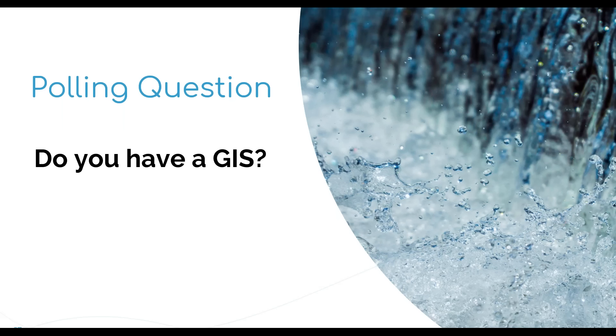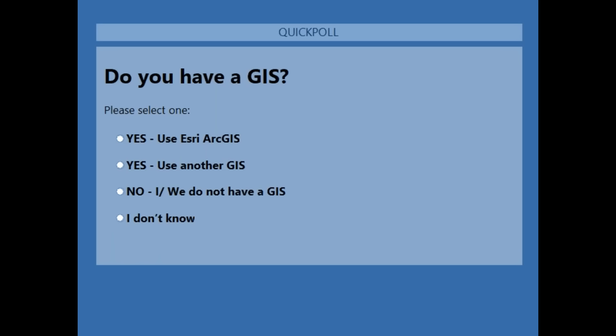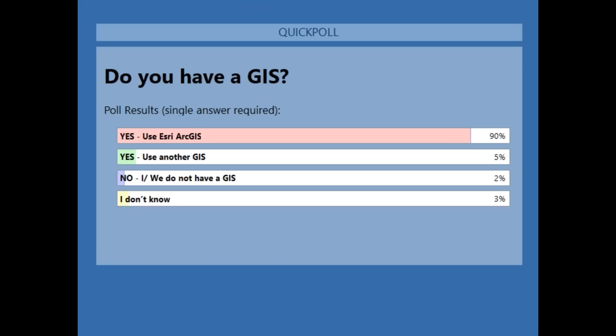Our third polling question: Do you have a GIS? Results: 90% of you said yes, we use ESRI ArcGIS. Another 5% said yes, we use another GIS. 3% did not know. And 2% said no, we do not have a GIS.